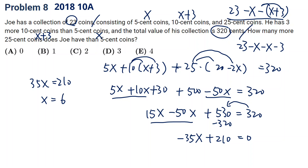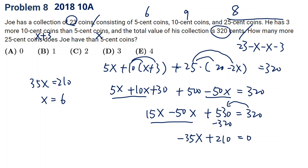The question is how many more 25-cent coins than 5-cent coins. So now 5-cent coins is 6, 10-cent coins is 9, and the 25-cent coins will be 23 minus 15, which is 8. So how many more? There are 8 minus 6, which is 2.